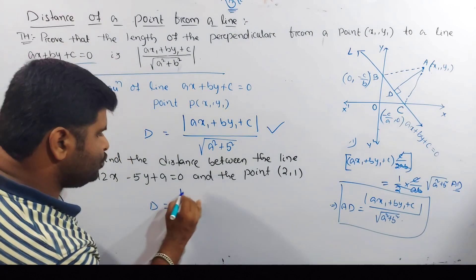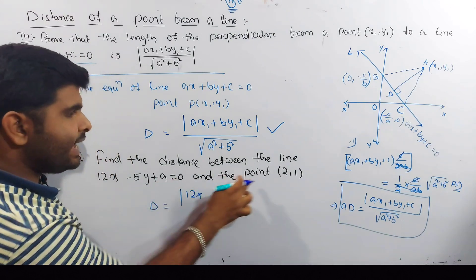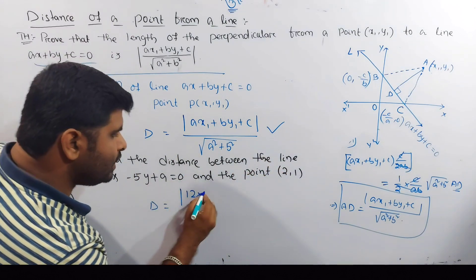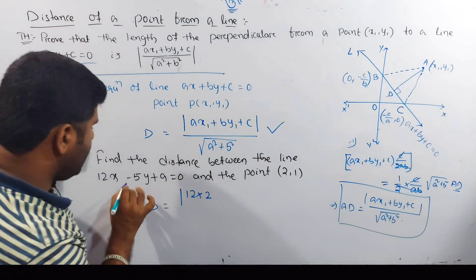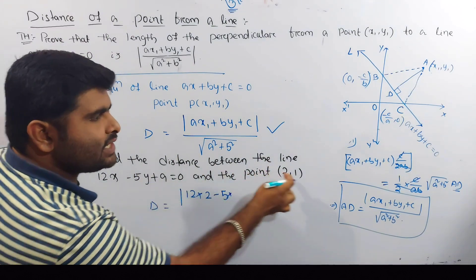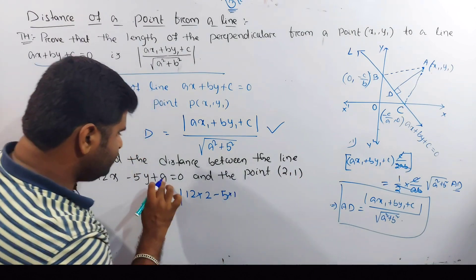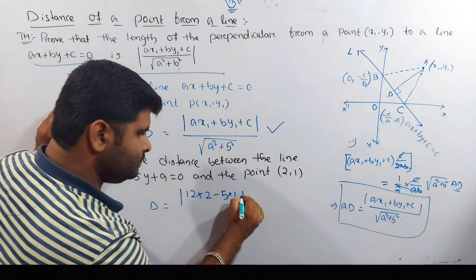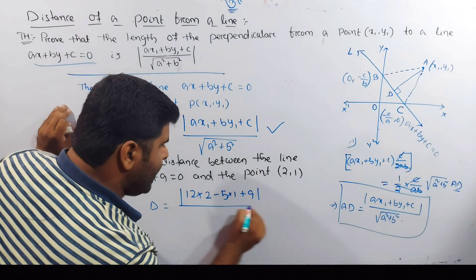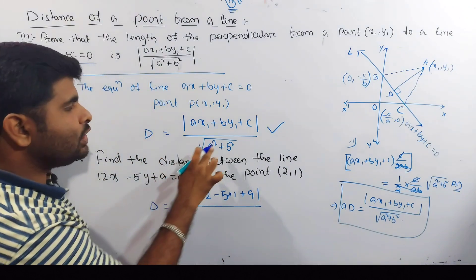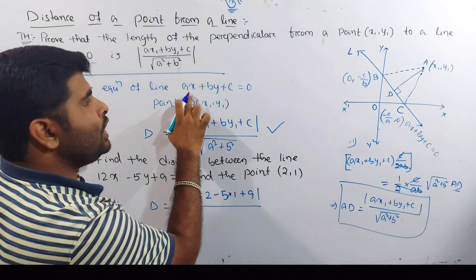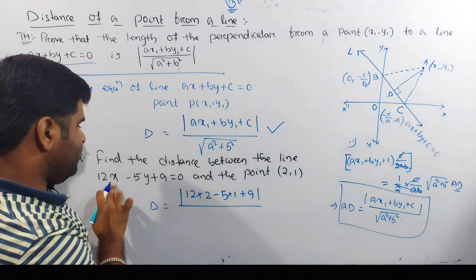Now suppose we find the distance between the line 12x minus 5y plus 9 equal to 0 and the point (2, 1). The point is given and the line is given. Using the distance formula: distance equals modulus of 12 times 2 minus 5 times 1 plus 9, divided by root over of 12 squared plus (minus 5) squared.